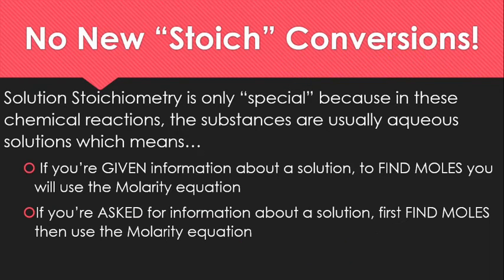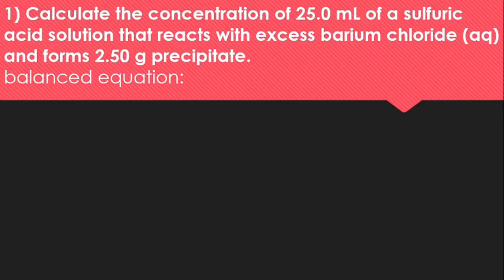Let's get started with these problems. It asks us to calculate the concentration. So, right off the bat, I am trying to find molarity. This is going to be our big capital M. Molarity is what I'm looking for. So that's probably going to mean doing that dimensional analysis, stoichiometry stuff first, and then doing that molarity equation. And it does go ahead and give me this volume in milliliters of a sulfuric acid solution that reacts with excess barium chloride that's aqueous and forms 2.5 grams of precipitate.